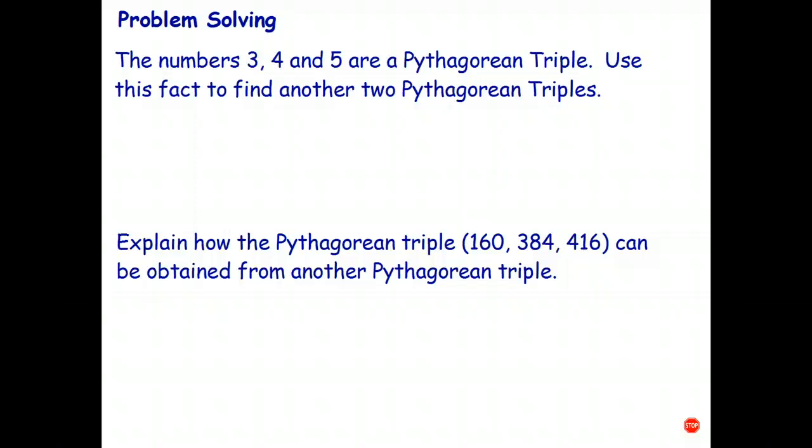Well, once again, we just have to multiply 3, 4, 5 by whatever numbers we want to. So I might multiply them all by 6. So 3 times 6 is 18, 4 times 6 is 24, 5 times 6 is 30. I might multiply them by 11. So that gives me 33, 44, and 55. So again, once you know one Pythagorean triple, you can generate as many new Pythagorean triples as you wish.